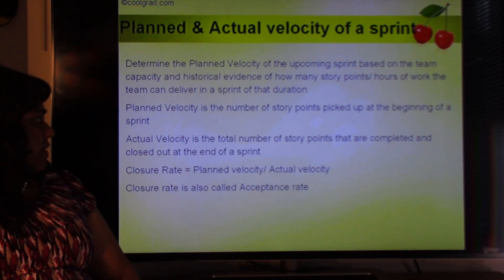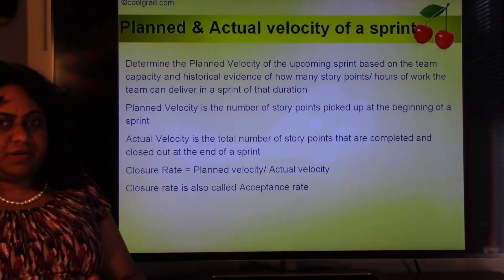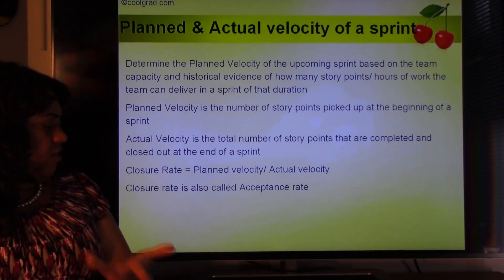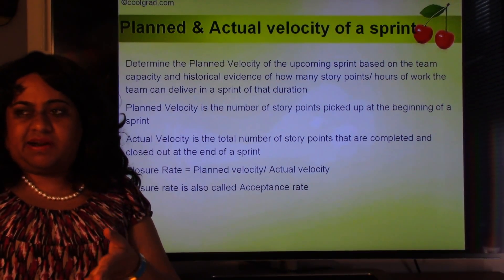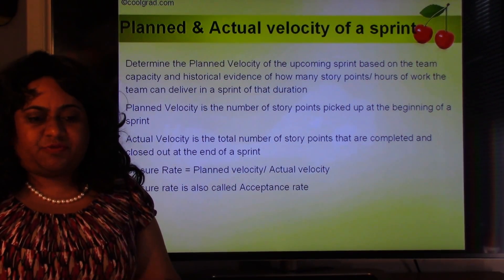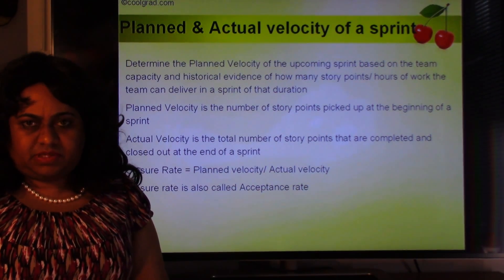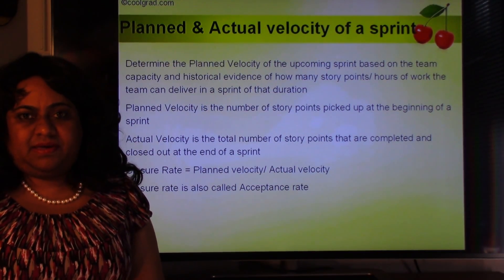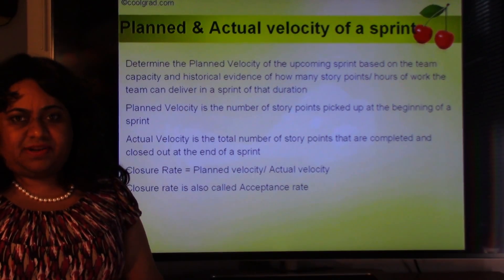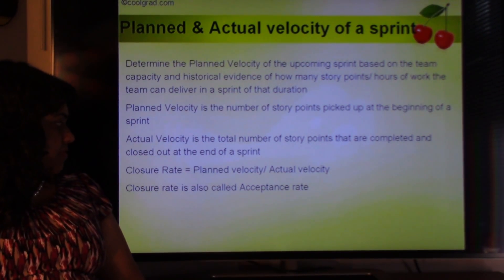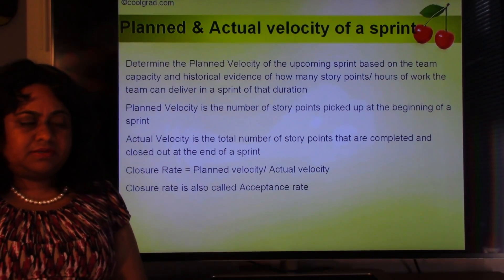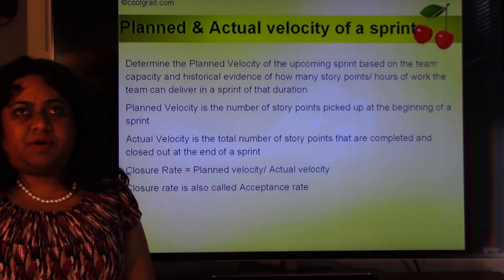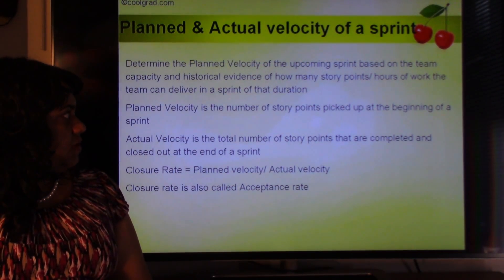Planned velocity is the number of story points picked up at the beginning of the sprint. Actual velocity is the total number of story points completed and closed at the end of the sprint. Suppose you picked up 600 hours but could only close out 500 hours — the other 100 hours belong to two user stories with major defects that weren't fully done. So 500 divided by 600 is the closure rate — actual velocity divided by planned velocity — approximately 83%. The closure rate is also called the acceptance rate.